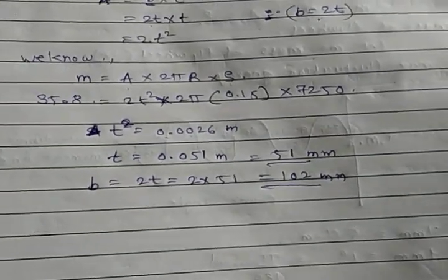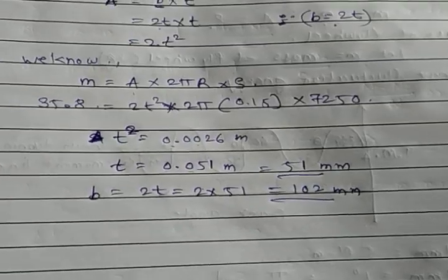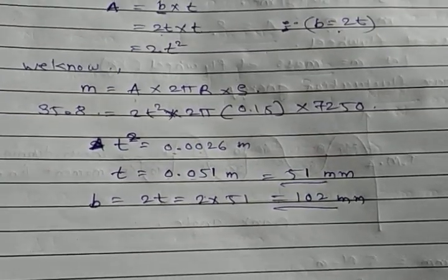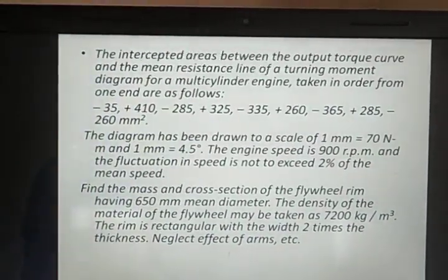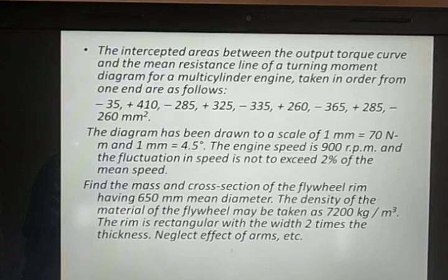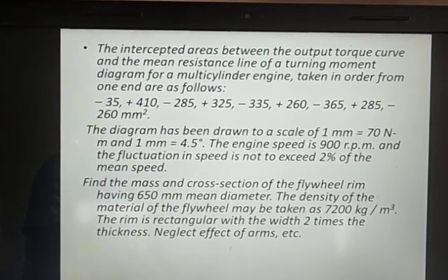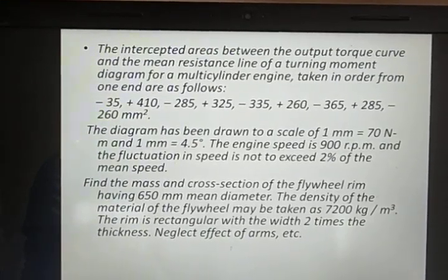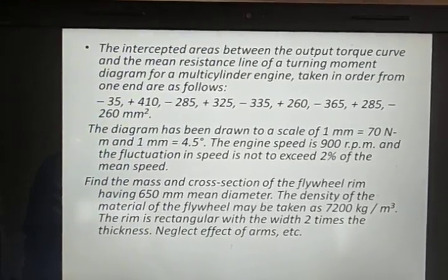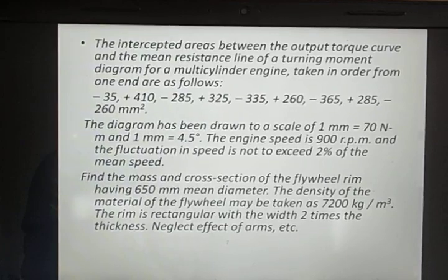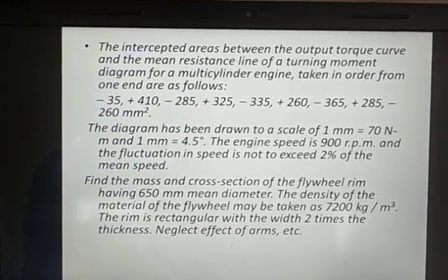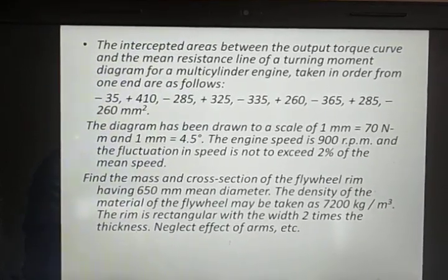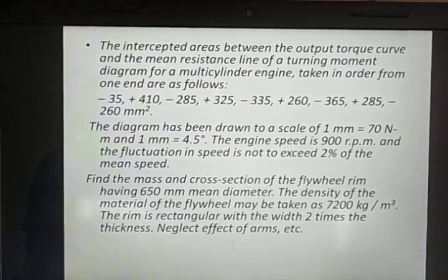Those are the final answers: mass m equals 35.8 kg, thickness T equals 51 mm, and width B equals 102 mm. There is another practice problem to solve by yourself — stop the video, write down the problem, and try to solve it.